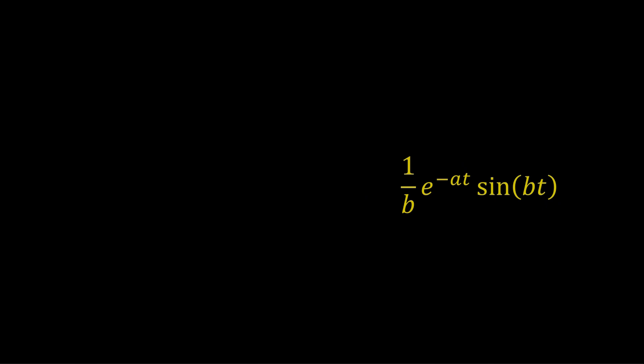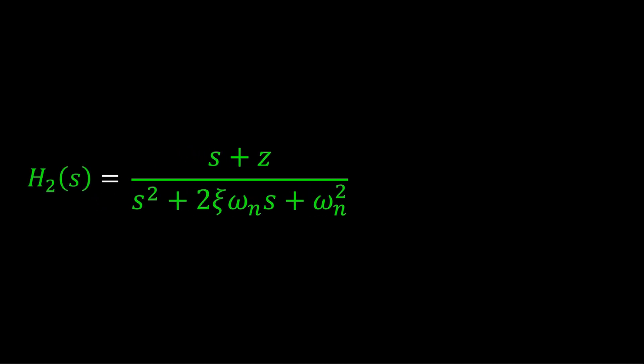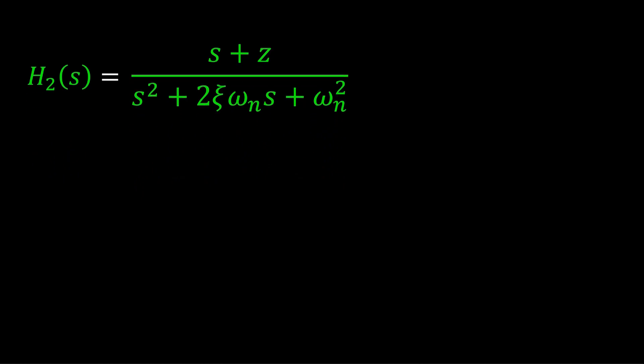So we just determined the no zero impulse response. Now, determine the impulse response for the transfer function with a single zero at minus z. We call it H2.